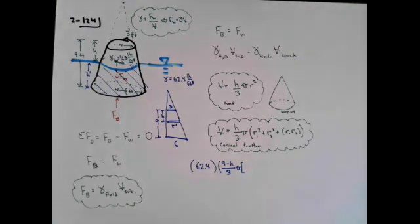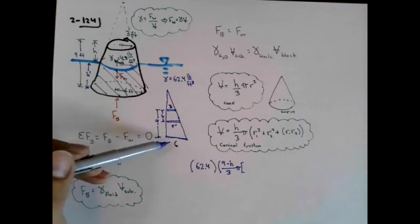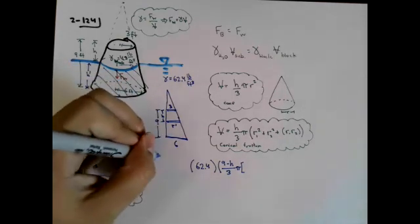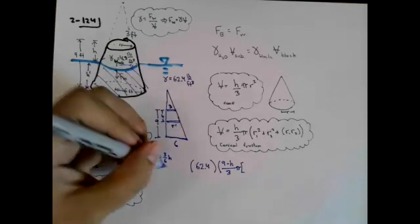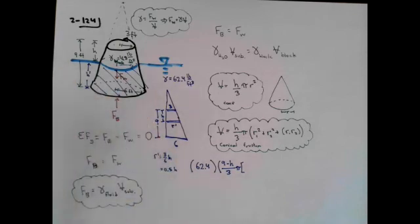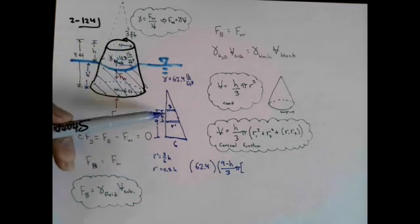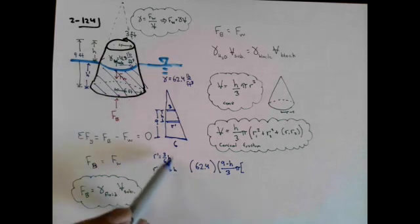One suggestion is 3 over 6 h, or simply 0.5h. Let's test if this is true. If h is 0, meaning the radius is at the top, r prime should be 3 when the whole block is submerged. But the expression gives 0. If h is 9, we get r prime is 4.5, but for h of 9, we should get r prime of 6. We need to come up with a different relationship.